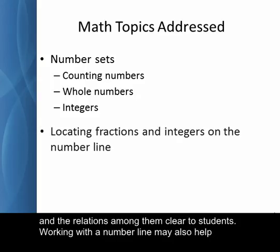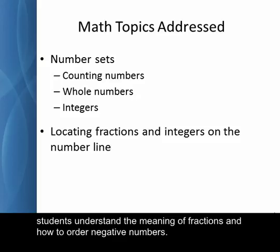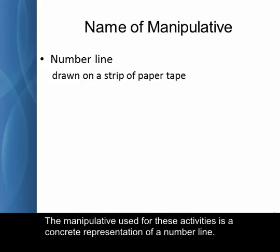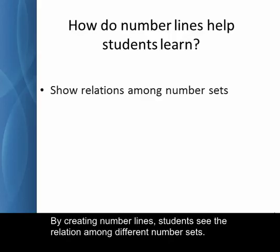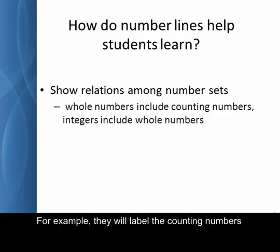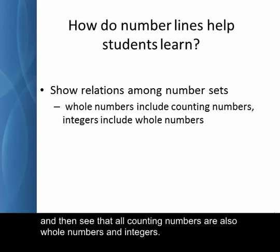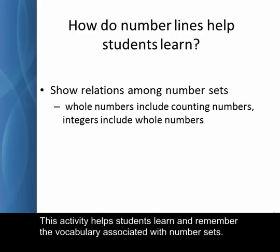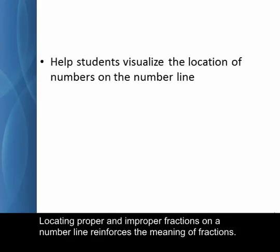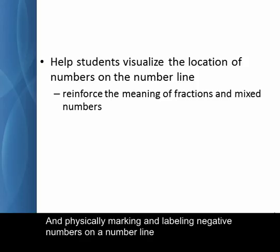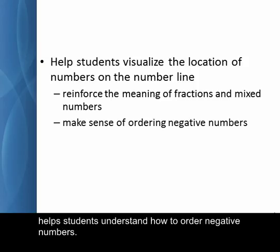Working with a number line may also help students understand the meaning of fractions and how to order negative numbers. The manipulative used for these activities is a concrete representation of a number line. Paper tape, like the kind used for adding machines, is ideal for making number lines. By creating number lines, students see the relation among different number sets. For example, they will label the counting numbers and then see that all counting numbers are also whole numbers and integers. This activity helps students learn and remember the vocabulary associated with number sets. Locating proper and improper fractions on the number line reinforces the meaning of fractions, and physically marking and labeling negative numbers on a number line helps students understand how to order negative numbers.